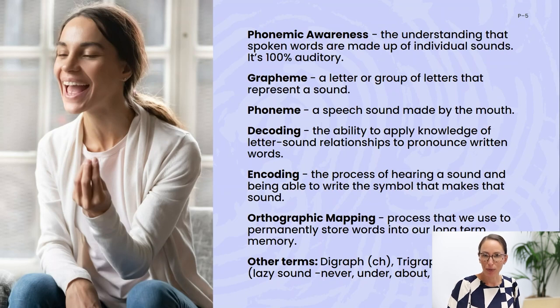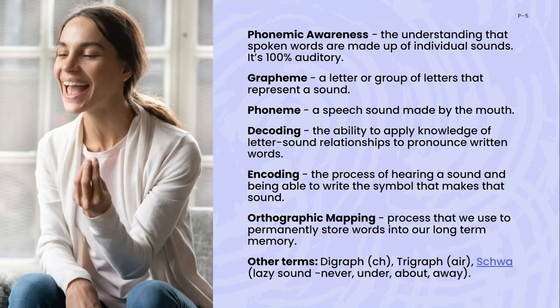Now I want to go over some key terms. Phonics and phonemic awareness are often used interchangeably, but they're quite different. Phonemic awareness is the understanding that spoken words are made up of individual sounds, and it's 100% auditory — students hearing the sounds in words. A grapheme is a letter or group of letters that represent a sound, and a phoneme is a speech sound made by the mouth. For example, the grapheme 'ch' represents the phoneme /ch/, and 'sh' represents /sh/.